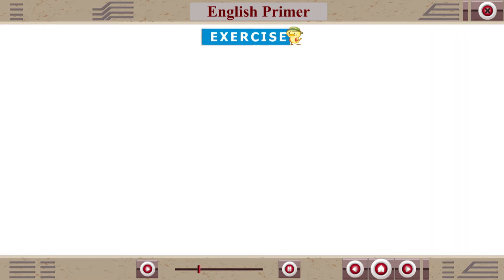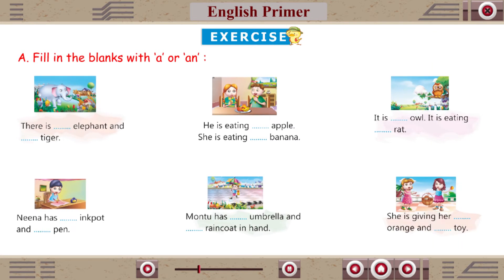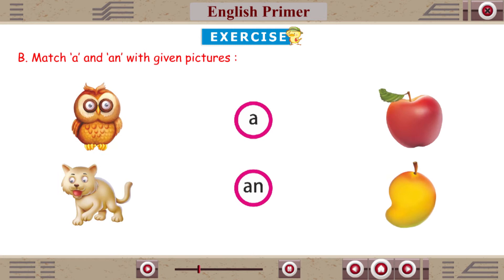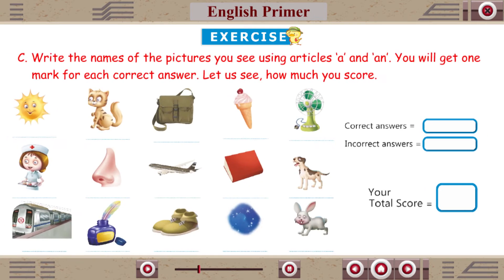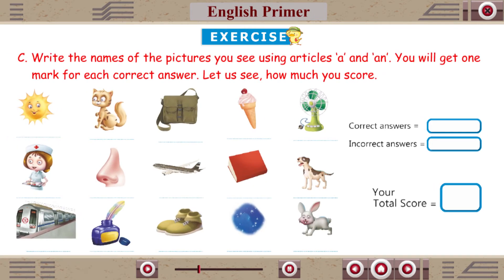Exercise A: Fill in the blanks with A or AN. Example: Montu has an umbrella and a raincoat in hand. Exercise C: Write the names of the pictures using articles A and AN. You will get one mark for each correct answer.